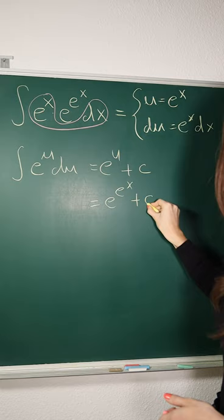So, we got that the antiderivative of e to the x times e to the e to the x is equal to e to the e to the x plus C.